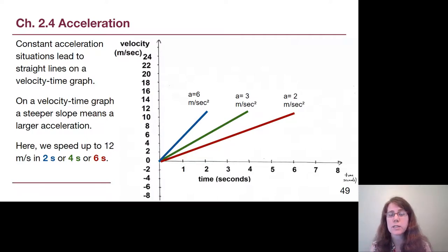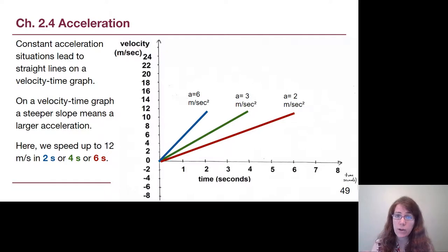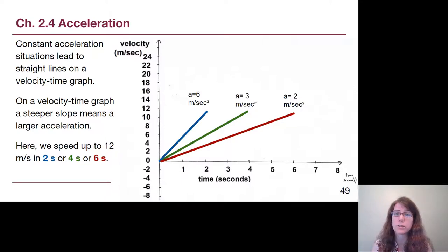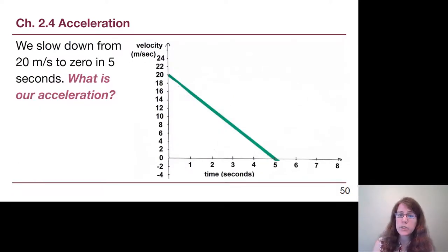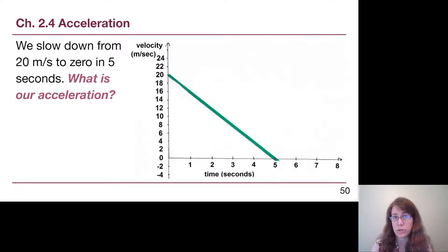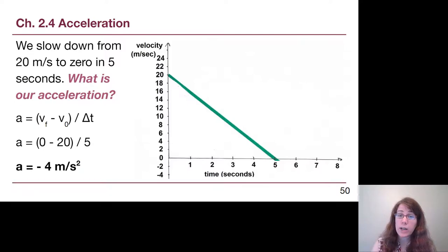Constant acceleration situations lead to straight lines on velocity-time graphs. This is our second type of graph — we spend a lot of time on position-time graphs and velocity-time graphs in this class. A steeper slope gives a higher acceleration number; a shallower slope gives a lower number — the same ideas as position-time graphs but with different terms. In this graph we start at 20 m/s and five seconds later end at 0 m/s. The acceleration is final minus initial over elapsed time: negative 4 meters per second squared.